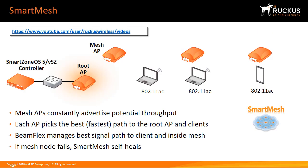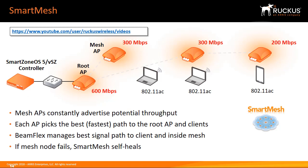SmartMesh enables access points to create a dynamic mesh without the need for cable connectivity. The root AP is connected with an Ethernet cable to the Layer 2 network, which has a SmartZone OS 5 controller. Meshing APs constantly advertise potential throughput. The first meshing AP advertises a capacity of 300 megabits per second. The second meshing AP, with direct view of the root AP, may also advertise 300 megabits per second. The third meshing AP, without direct view of the root AP, takes an extra hop, resulting in a capacity advertisement of 200 megabits per second.